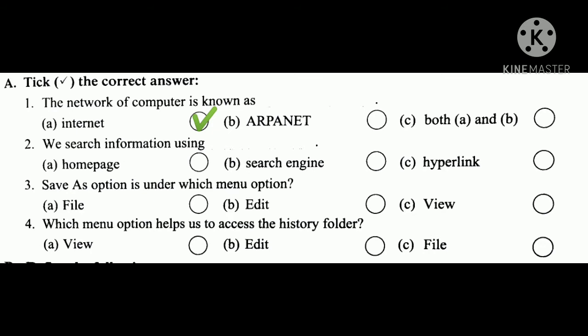Number 2: research information using DASH. A, homepage. B, search engine. C, hyperlink. The answer is B, search engine. Number 3: Save As option is under which menu option? A, File. B, Edit. C, View. The answer is A, File.